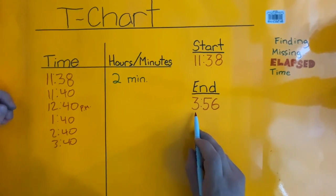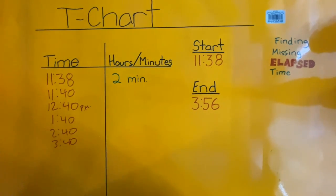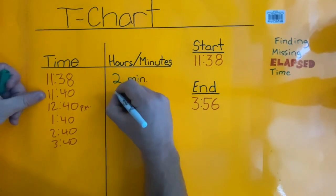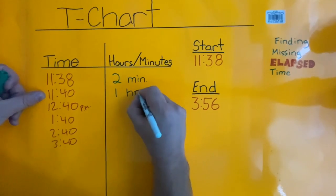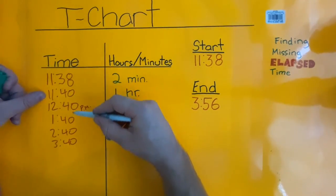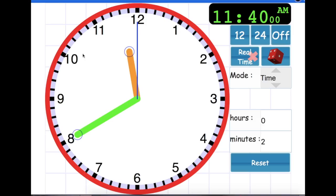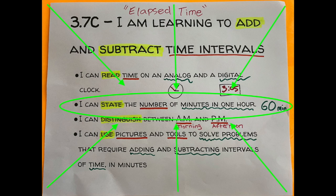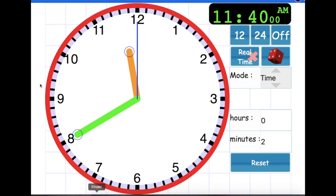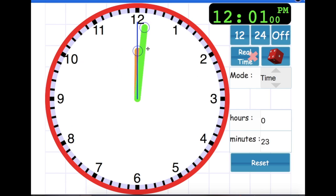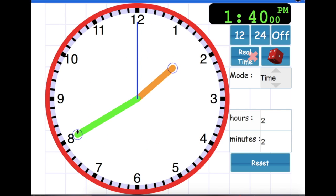We don't want to go up any more hours because we are in the 3 o'clock hour. So from 11:40 to 12:40 we're going to label all of these as one hour — we label hour with 'hr.' Remember that one full rotation of the clock is one hour or 60 minutes. We've done four of them, so our digital clock should match what we had written down, which was 3:40. One hour, two hours, three hours, four hours.